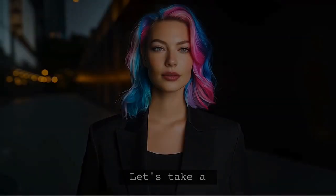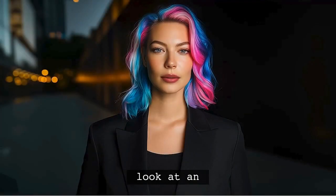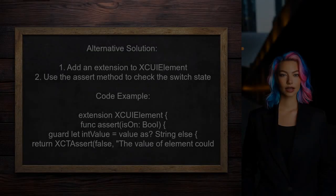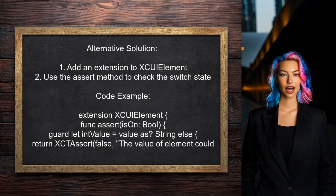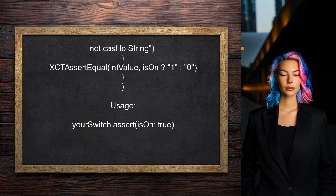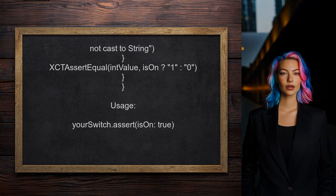Let's take a look at an answer from another user. An alternative approach involves adding an extension to the XCUIElement class in Swift. This extension allows you to assert the on or off state of a UISwitch directly by checking its value.